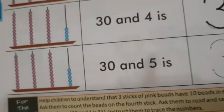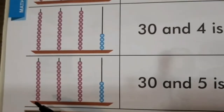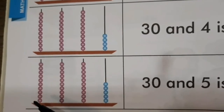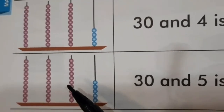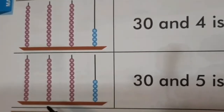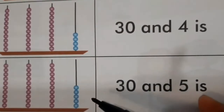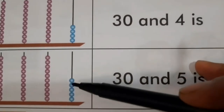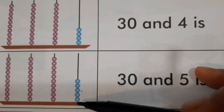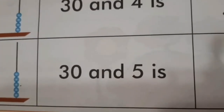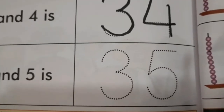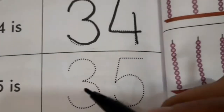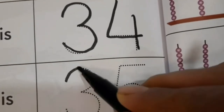Now, next one. First line: 10 beads. Second line: 10 beads. Third line: 10 beads. तो कितने हो गए? 30. और लास्ट लाइन में कितने बीज है? 1, 2, 3, 4 and 5. We have 5 more beads. So, 3, 0 — 30 and 5 is 3, 5 — 35. So, let's trace number 3, 5, 35.